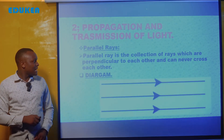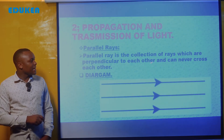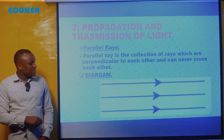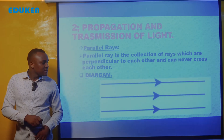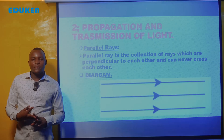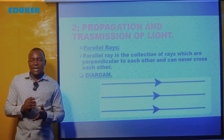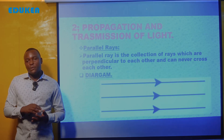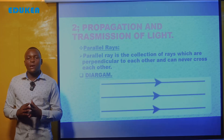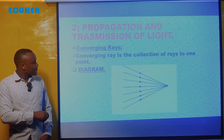We say that parallel rays are the collection of rays which are perpendicular to each other and can never cross one another. As you can see, the rays of light are perpendicular to each other, meaning they will not come to cross or meet. Kwamba mianga ya mwanga mbao tunasema ni parallel haiwezi kukutana because they are parallel in nature.